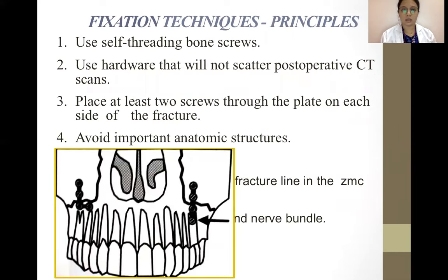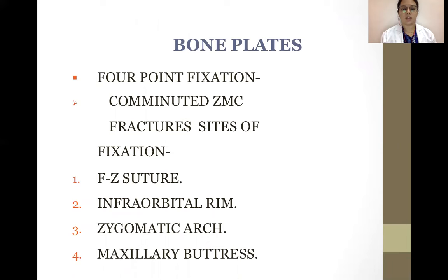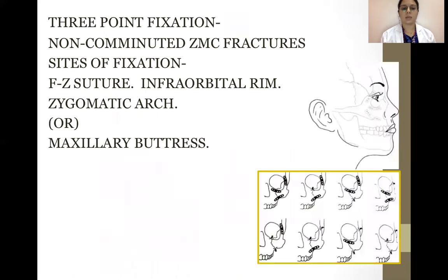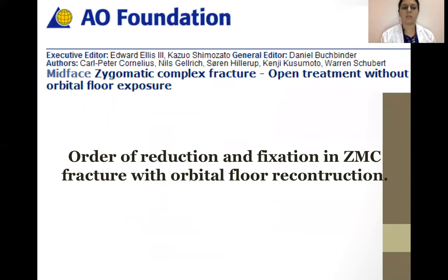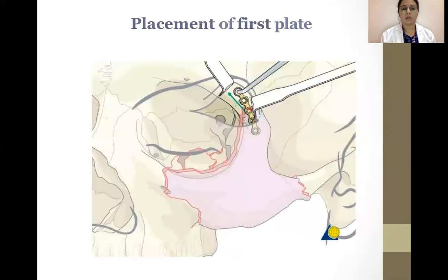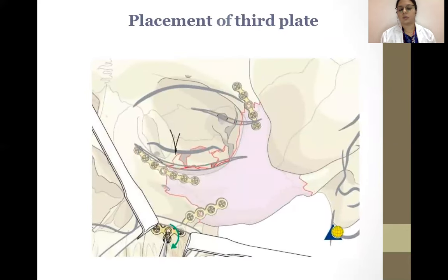Principles of fixation: use self-threading bone screws; use hardware that will not scatter post-operative CT scans; place at least two screws per plate on each side of the fracture; avoid important anatomic structures; use as thin a plate as possible in periorbital areas; place as many bone plates in as many locations as necessary for stability. Bone plate fixation: four-point fixation for comminuted ZMC fractures — sites include the frontozygomatic suture, infraorbital rims, zygomatic arch, and maxillary buttress. Three-point fixation for non-comminuted ZMC fractures — FZ suture, infraorbital rims, zygomatic arch, and maxillary buttress. Two-point fixation for simple non-comminuted ZMC fractures — FZ suture, infraorbital rims and buttress.